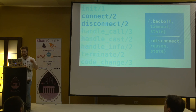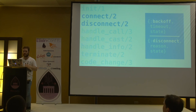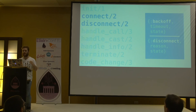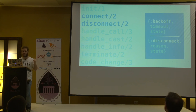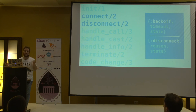This lends itself to a pretty nice pattern: you get a TCP error in handle_info, react by returning disconnect from handle_info, which triggers the disconnect callback. In disconnect, you close the socket and return backoff so it will try to reconnect after a given timeout. You get notified of the error, disconnect, back off, and get notified again after a timeout period. In connect, if you succeed, good. If not, you just return backoff and keep returning backoff until you're able to connect.